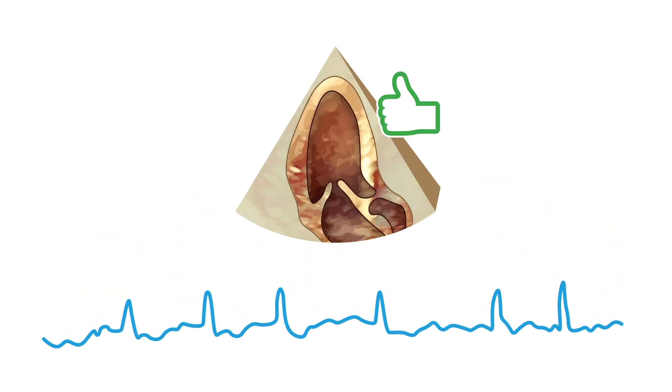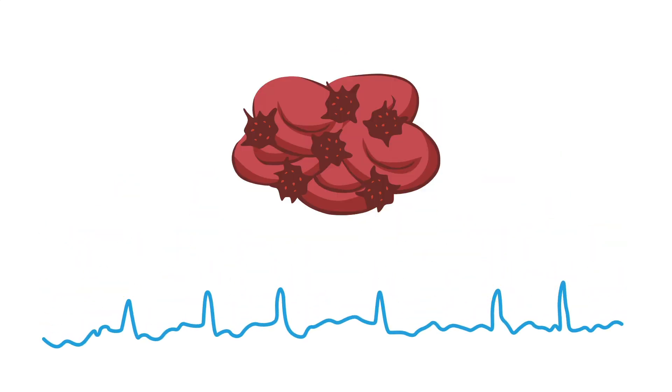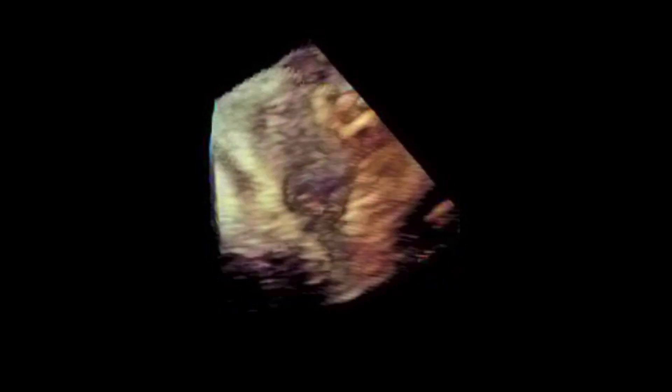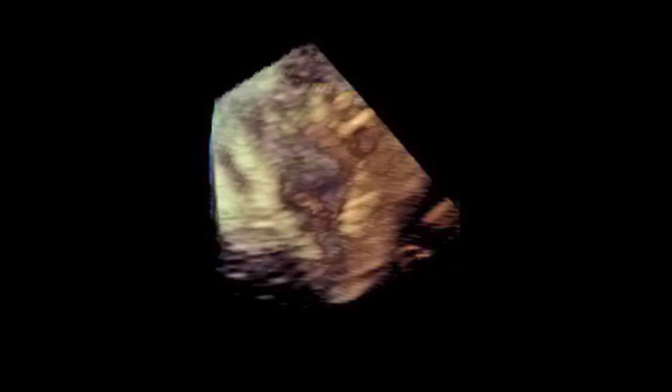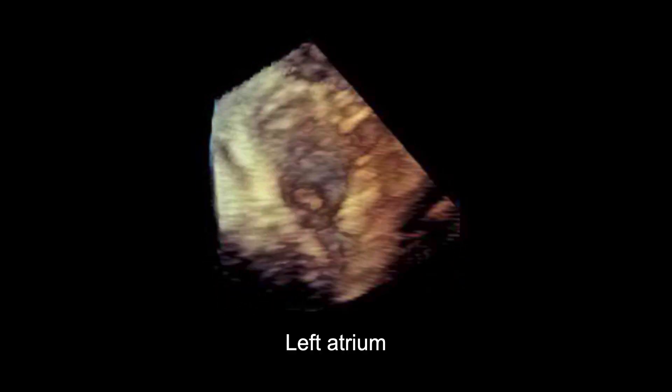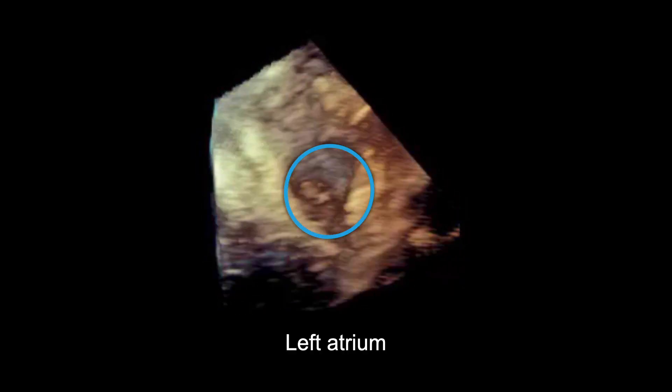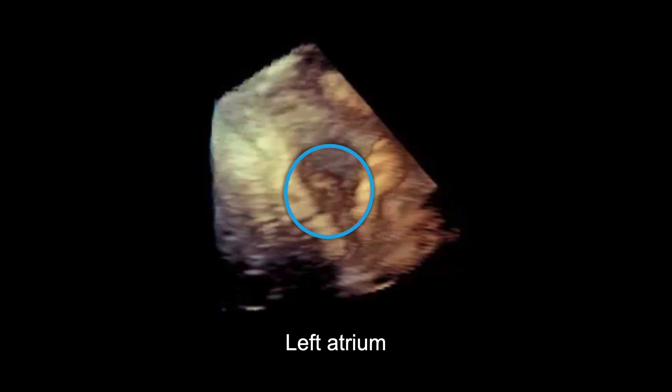Also keep in mind that thrombi are a common complication of atrial fibrillation. Here is a transesophageal 3D echo volume rendering of the left atrium showing a large thrombus in proximity to the left atrial appendage orifice.